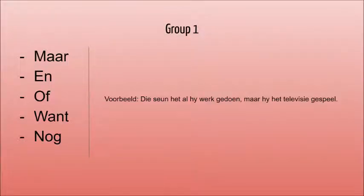In group 1, nothing in either sentence changes. The conjunction is inserted between the two sentences. Examples of words in this group are en, want, maar, and of. Also, maar and want get a comma placed before them.